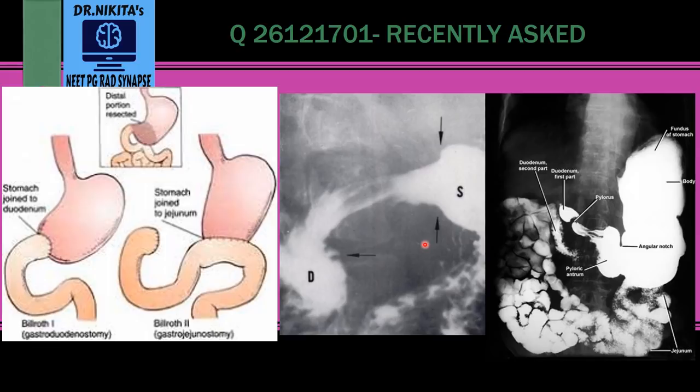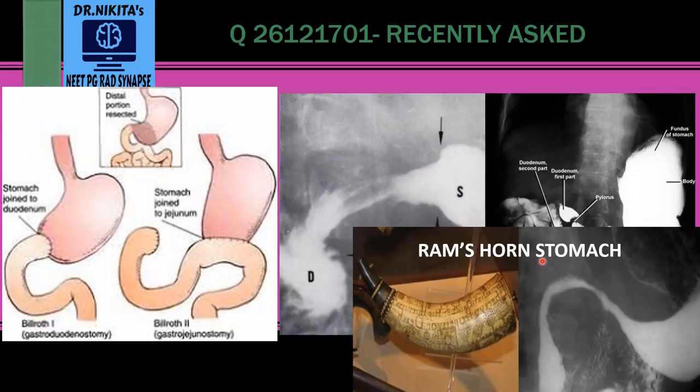Another thing to be remembered about Crohn's disease is the Ram's horn appearance of the stomach. In the distal part of the stomach, there is a conical or tubular narrowing like a ram's horn — an instrument made from the horn of an animal. So it is like the body of the stomach with the distal stomach showing conical or tubular narrowing. That is Ram's horn stomach. These appearances are seen in Crohn's disease.